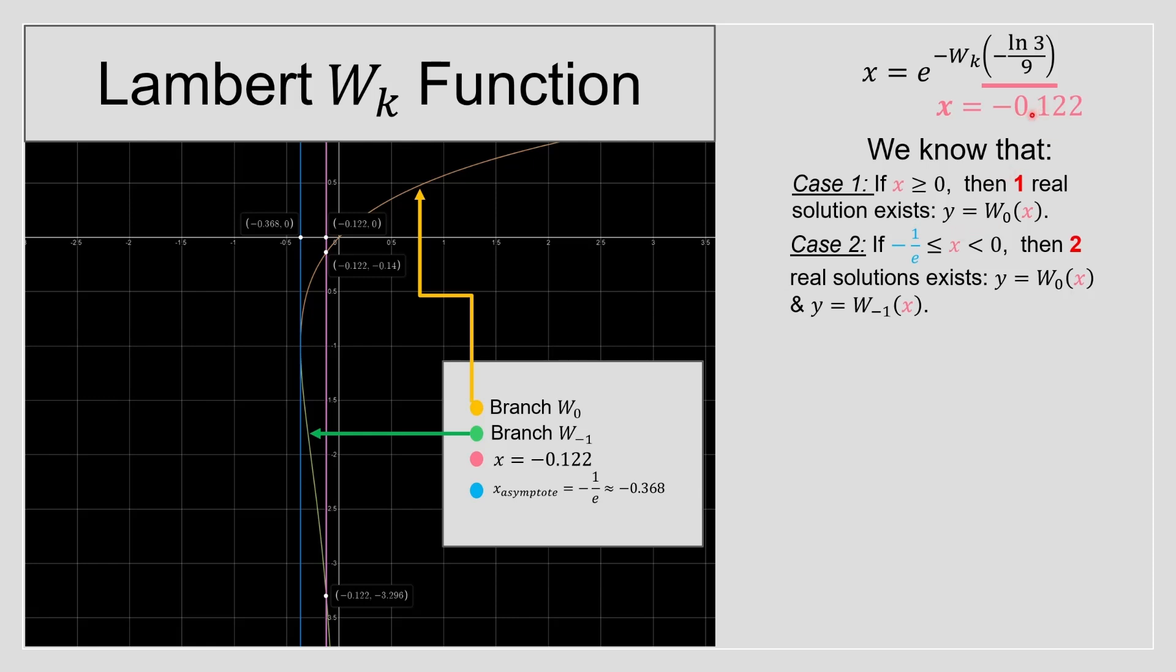Let's proceed to case 2. Is our x between these two values? Yes. As you can see over here, our pink line is between the 0 and this negative 0.368, so we're going to have two real solutions. And if case 3, let's say it was a different example, case 1 and case 2 are not satisfying, we have infinitely complex solutions.